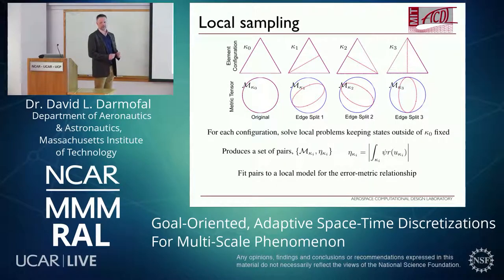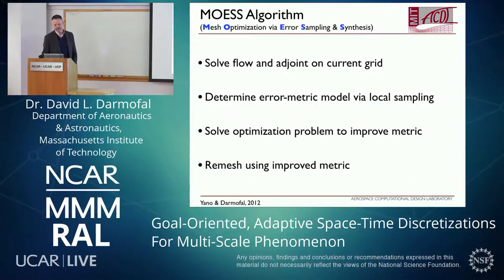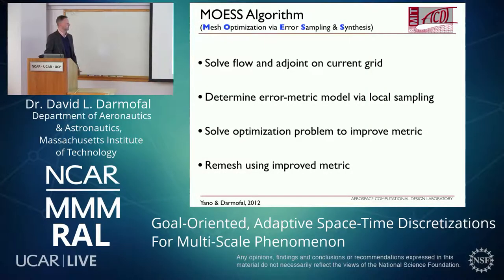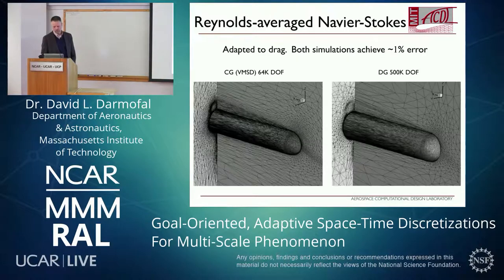At the end of this process, for every element I have a model of how the error depends on the shape of that element. I plug all of that into an optimizer and find the metric that produces minimum error for a fixed cost — fixed number of elements. The full adaptive process: solve the flow and adjoint on the current grid, determine the error-metric model through local sampling, optimize the metric, pass the optimized metric to a mesher that generates a mesh matching that metric, then repeat.